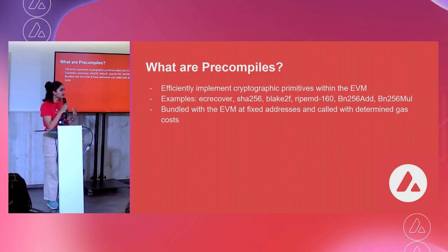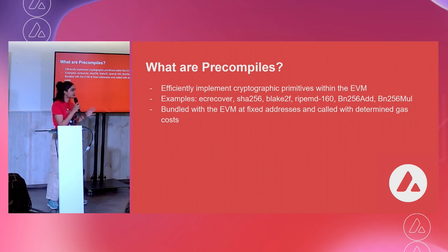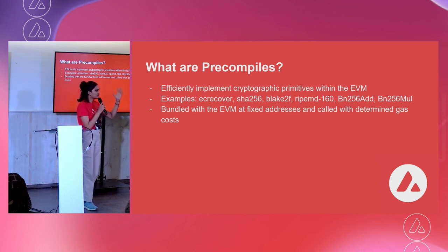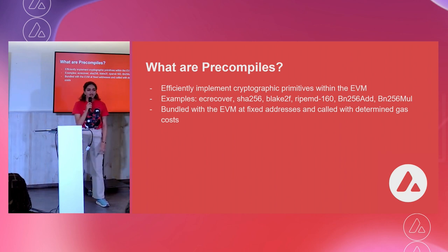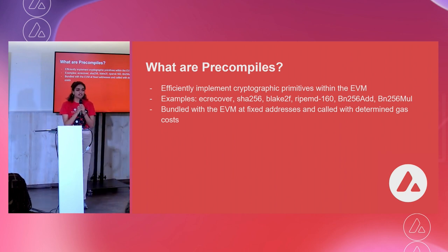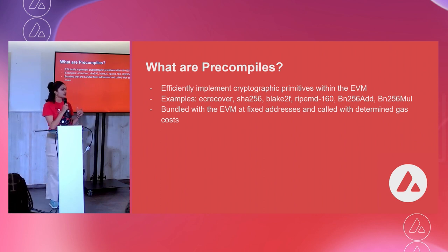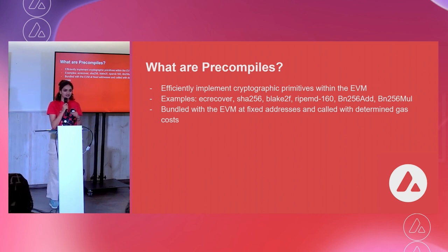Right now in GoEthereum, there are nine precompiles. All of them are cryptographic primitives. Some examples are listed, and they're bundled in the EVM at fixed addresses and called with determined gas costs.